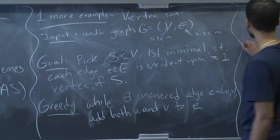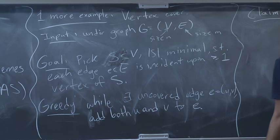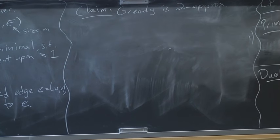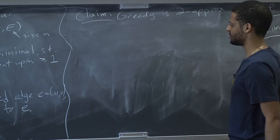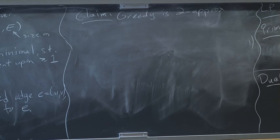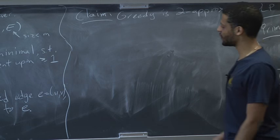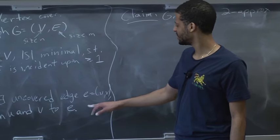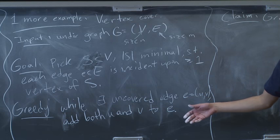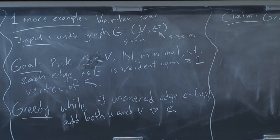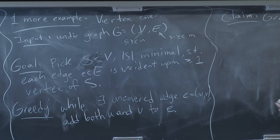The claim is that greedy is a 2-approximation. One proof: the edges that appear in the loop throughout every iteration form a matching. Therefore, the number of vertices we return is twice the size of a particular matching. Any vertex cover size is lower bounded by the size of any matching.